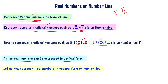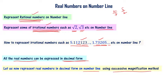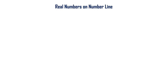Now let us learn how to represent those numbers on the number line. The method we will use is called the Successive Magnification Method. Please note this: how to represent real numbers in decimal form on the number line using the successive magnification method. Let us start with a simple example.